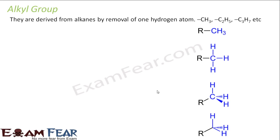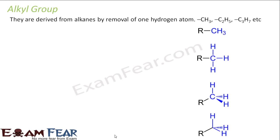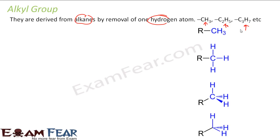Let's look at alkyl groups — methyl group, ethyl group, propyl group. Alkyl groups are derived from alkanes, which we studied in the last chapter. An alkyl group is just a child of an alkane: from an alkane you remove one hydrogen and you get an alkyl group. From methane you get CH3, from ethane you remove one hydrogen and get ethyl, from propane you get propyl.